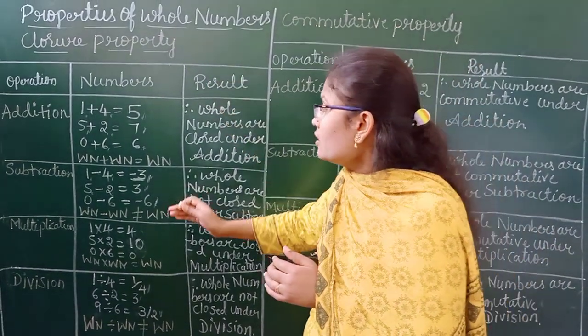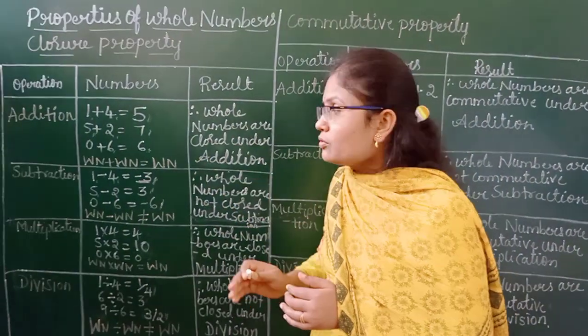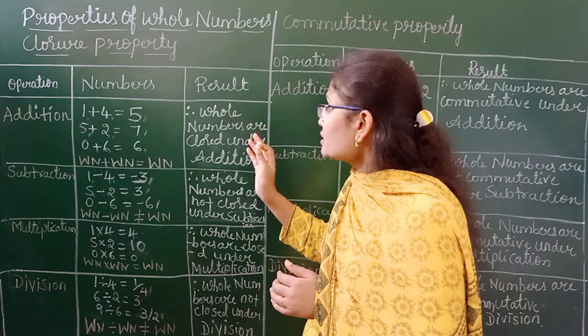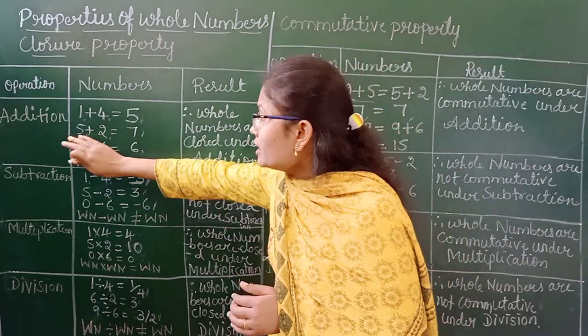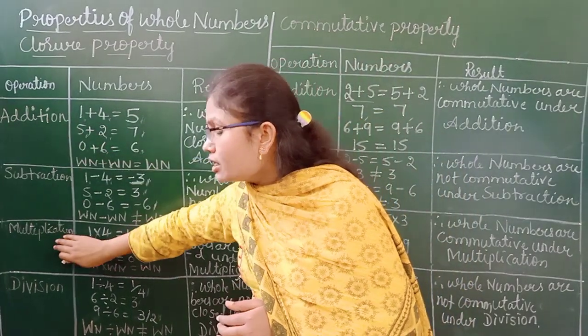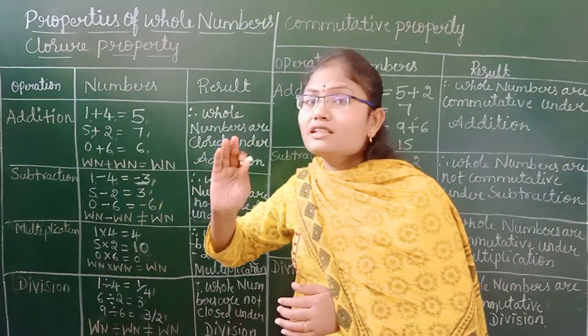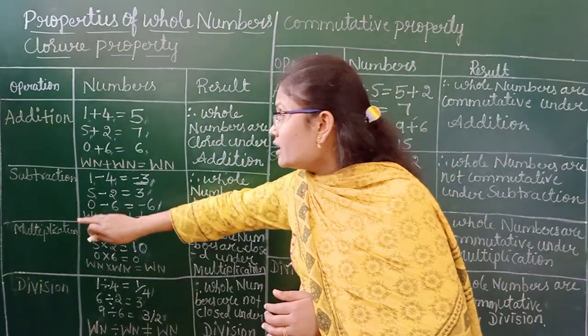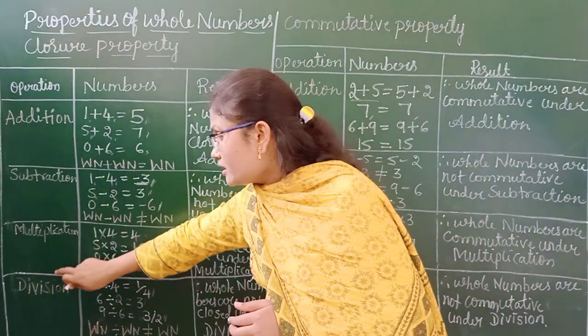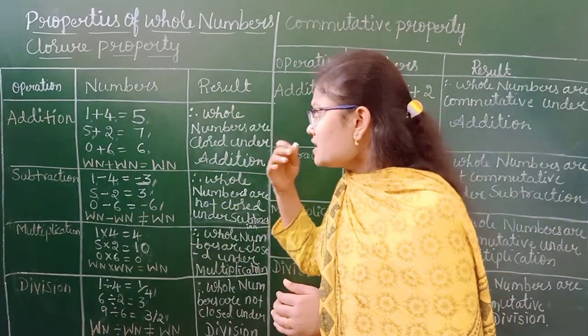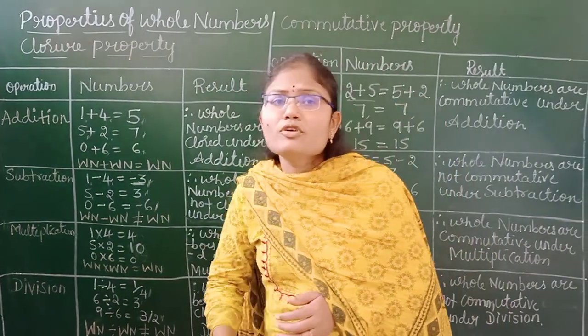Overall, whole numbers are closed under addition and multiplication, but not closed under subtraction and division.